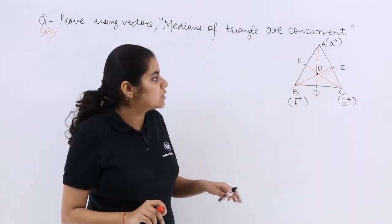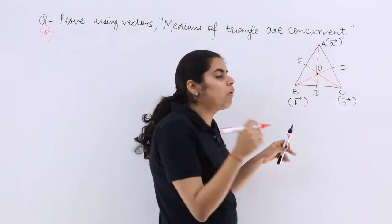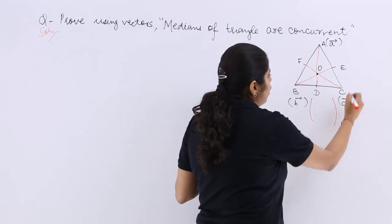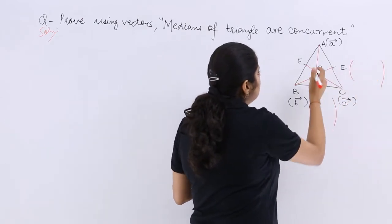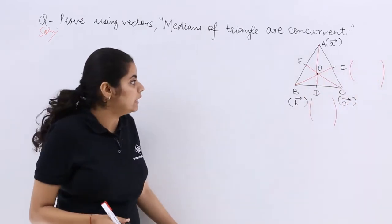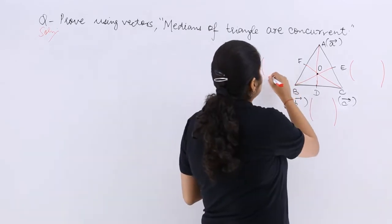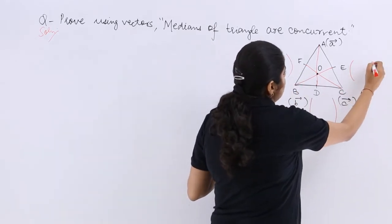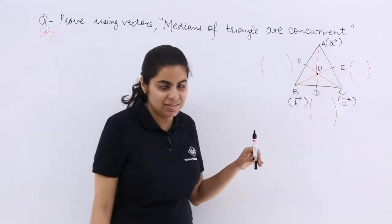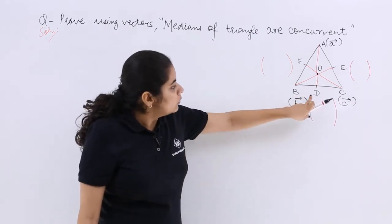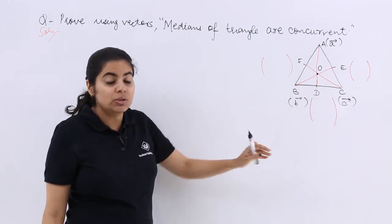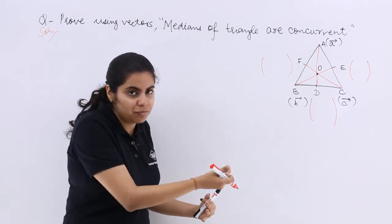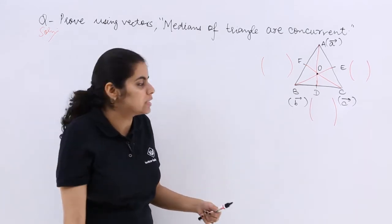Now first of all, what is the coordinate of D or position vector of D? Similarly, what is the position vector of E and similarly what is the position vector of F? So I need to know the position vectors. Now D is the midpoint, so you have to write everything which I am drawing in rough, you have to actually write into statements.